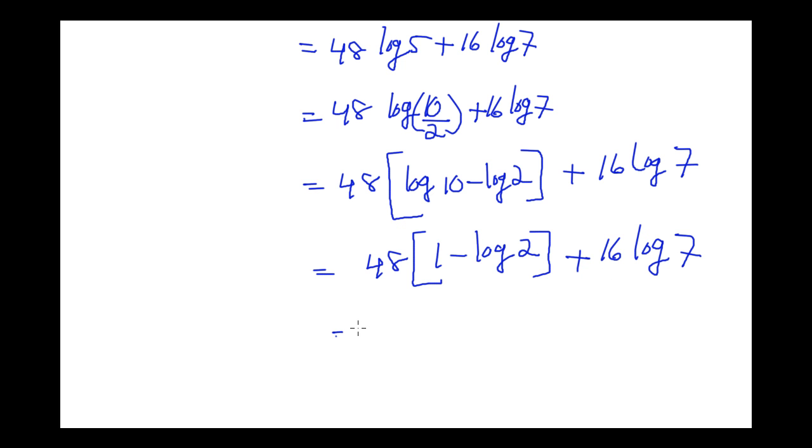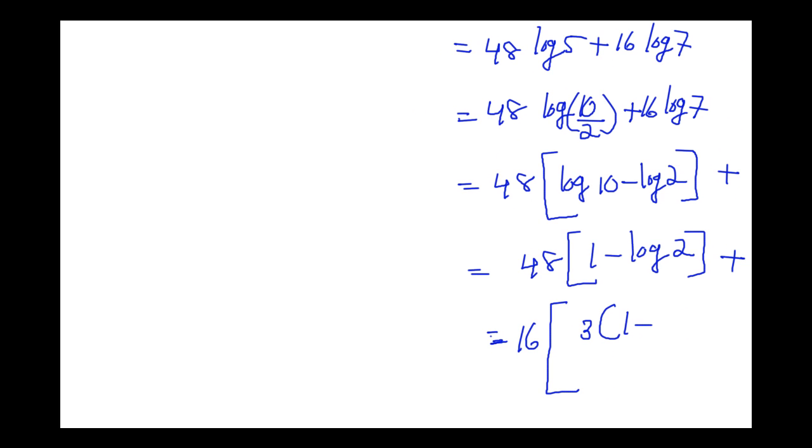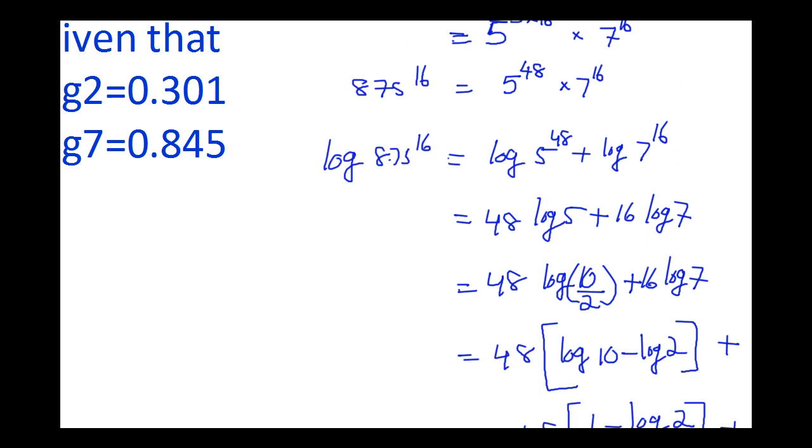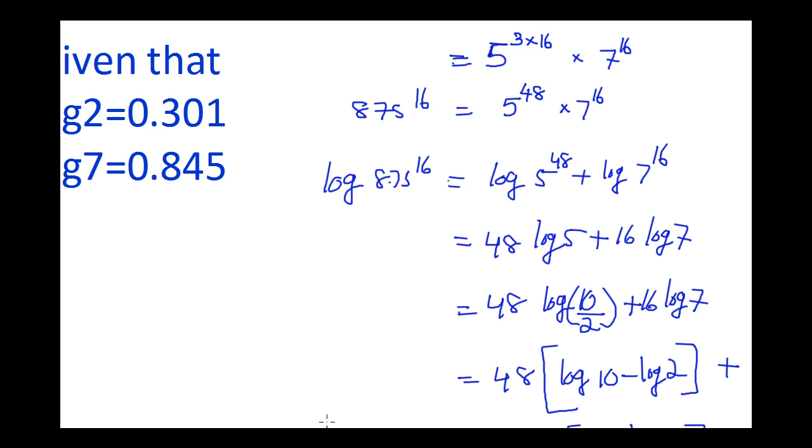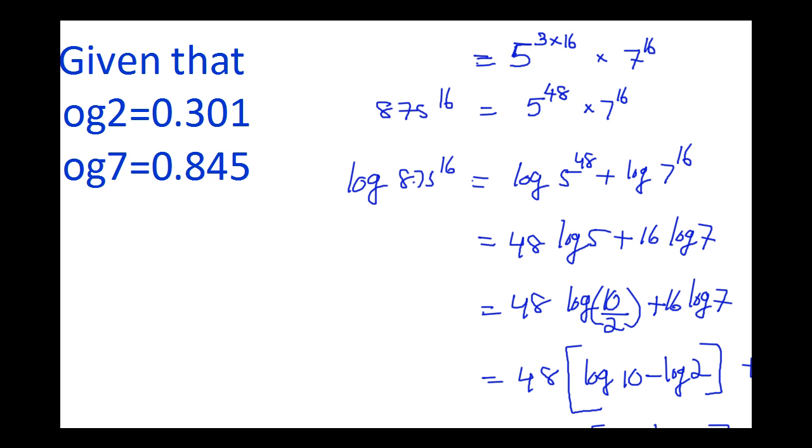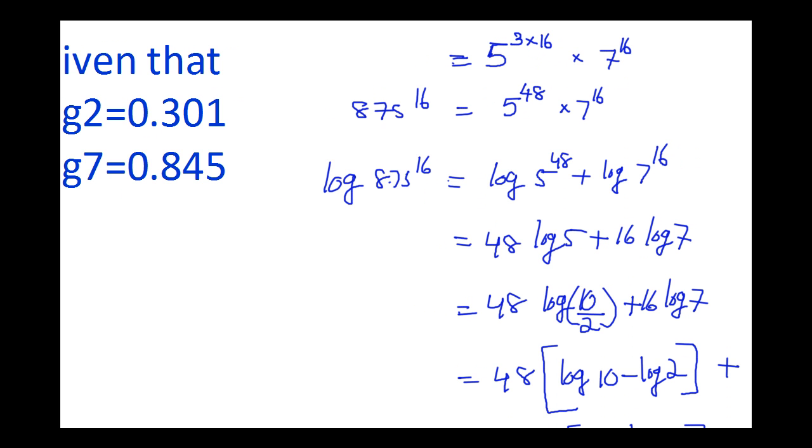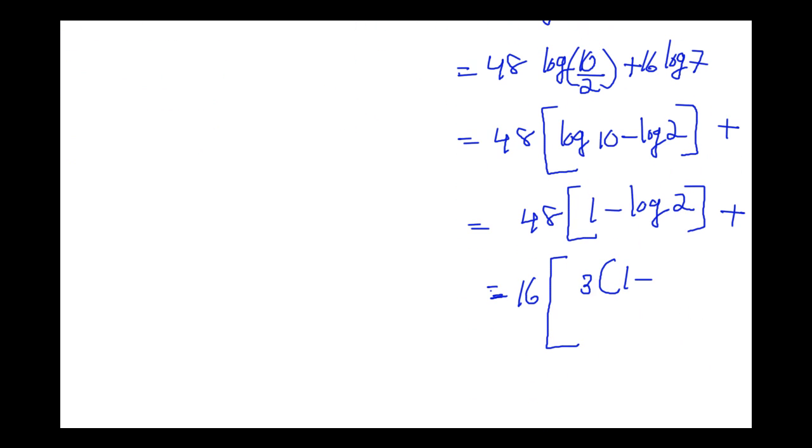So 16 in whole bracket there is 3 into 1 minus, substitute the given values of logarithm. The value of log 2 is given as 0.301 and log 7 is 0.845.